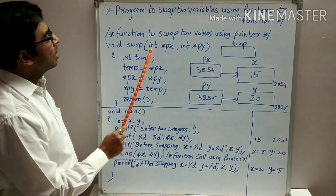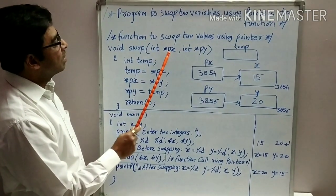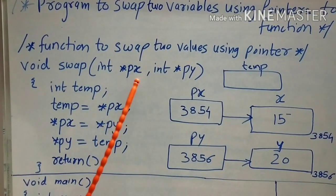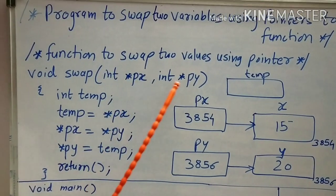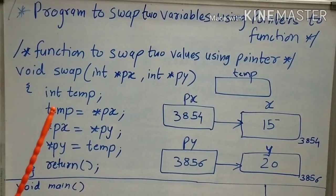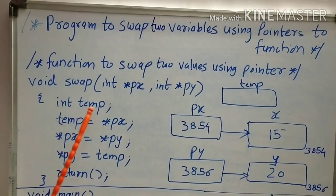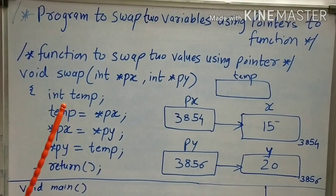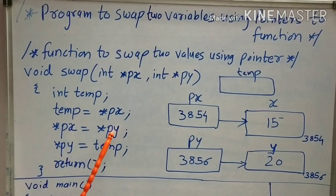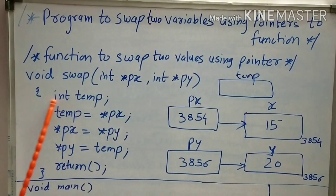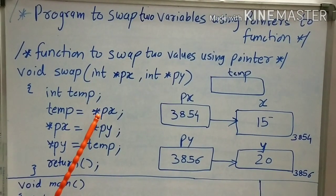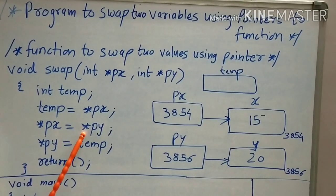There are two arguments, and both arguments are pointers. The first argument is pointer PX and the second argument is pointer PY. As we studied in theory, here you have to write the declaration of the pointer. Now, using these pointers, I will write the steps to swap the values in terms of pointer. For swapping, I require one temporary variable. Let temp be a local variable in this function. The first step is temp equals star PX, star PX equals star PY, star PY equals temp. Instead of using direct variables X and Y, I am using pointer to X that is star PX and pointer to Y that is star PY.